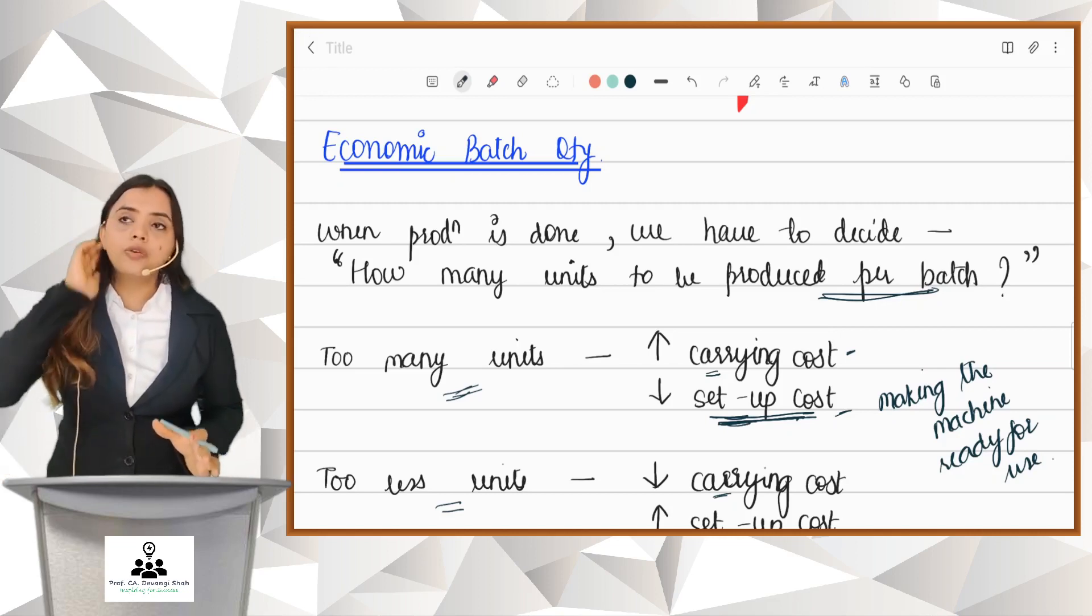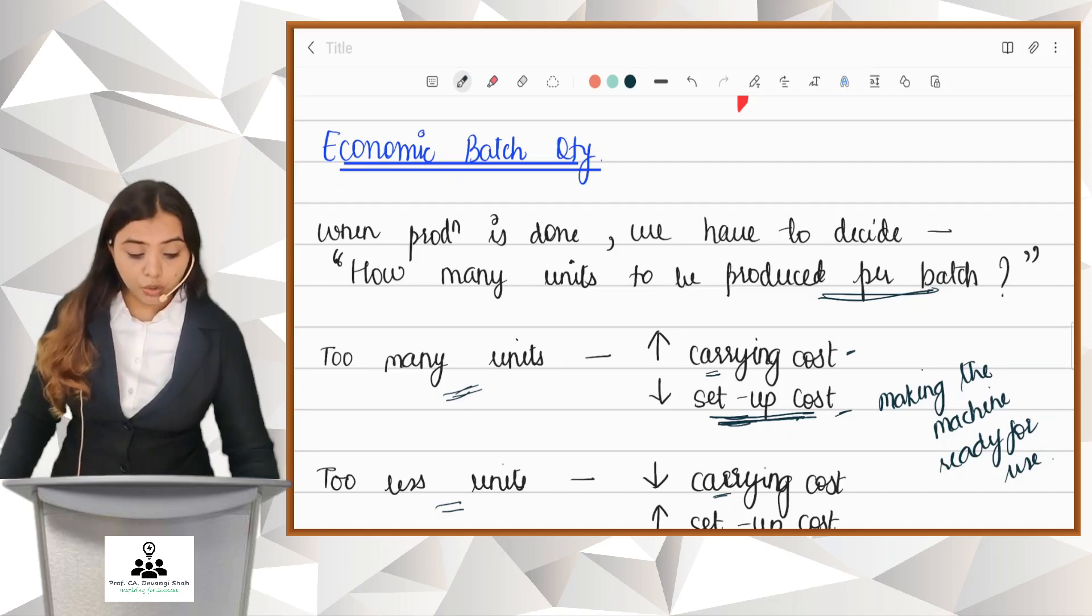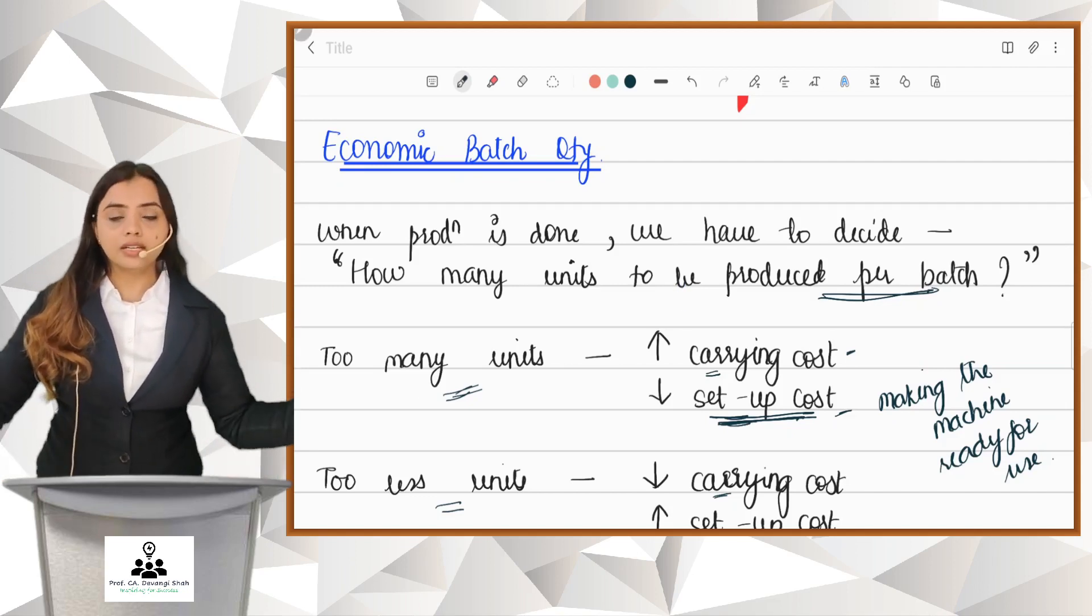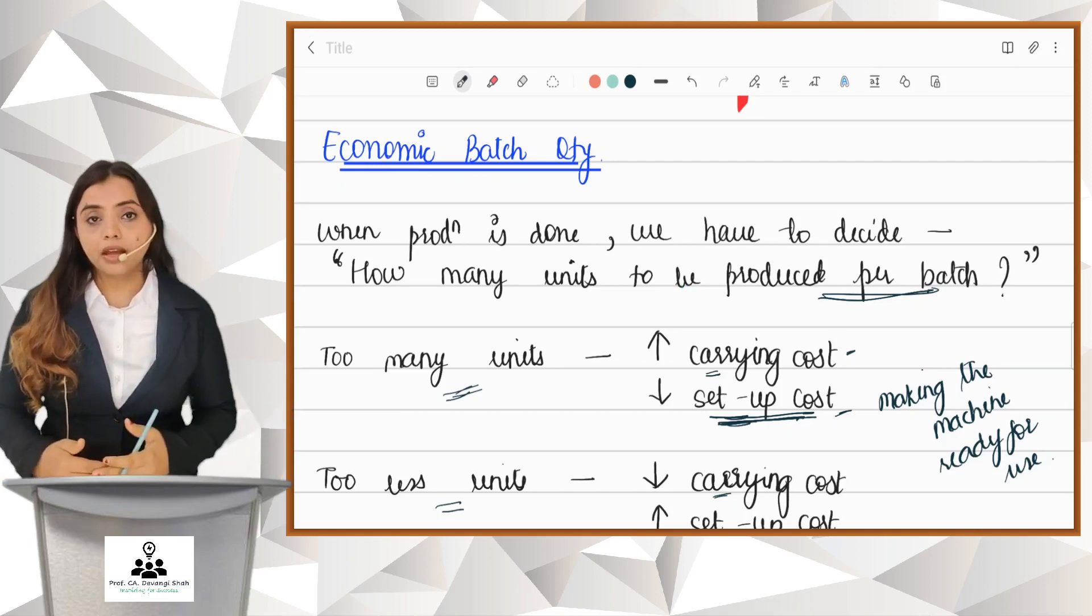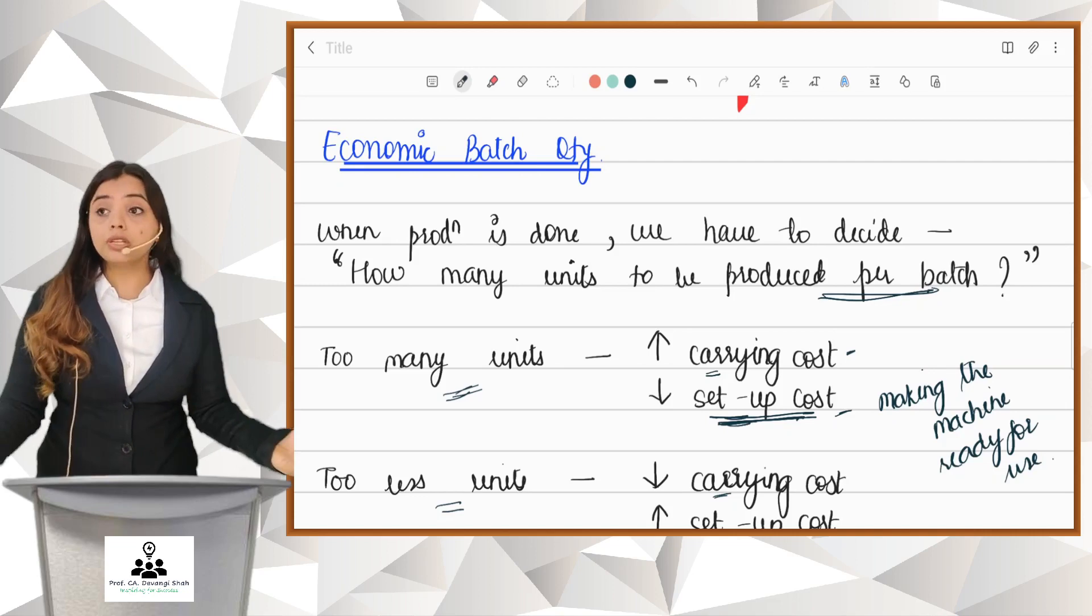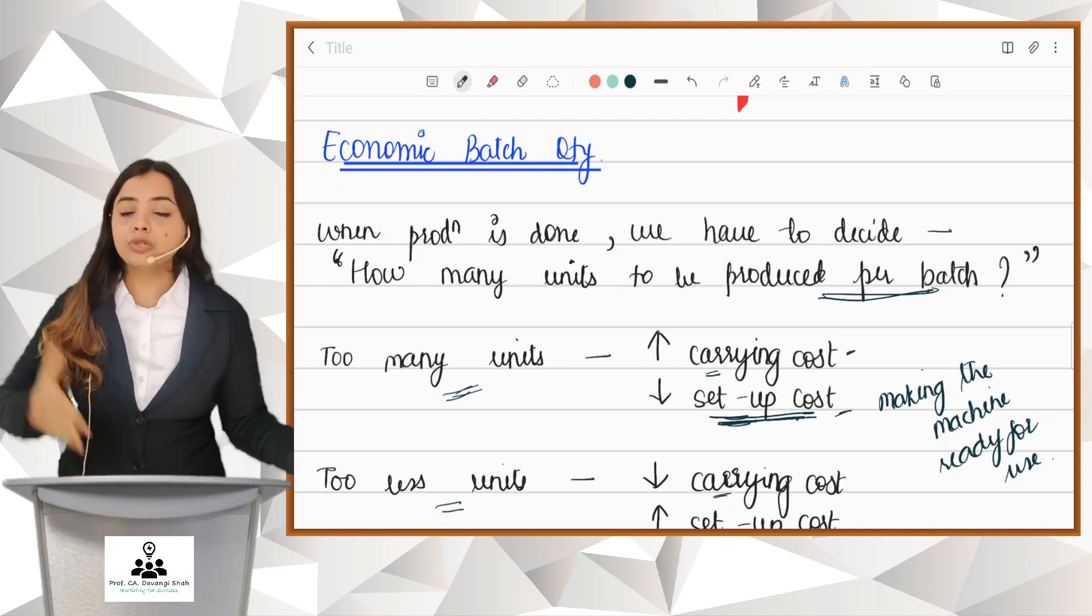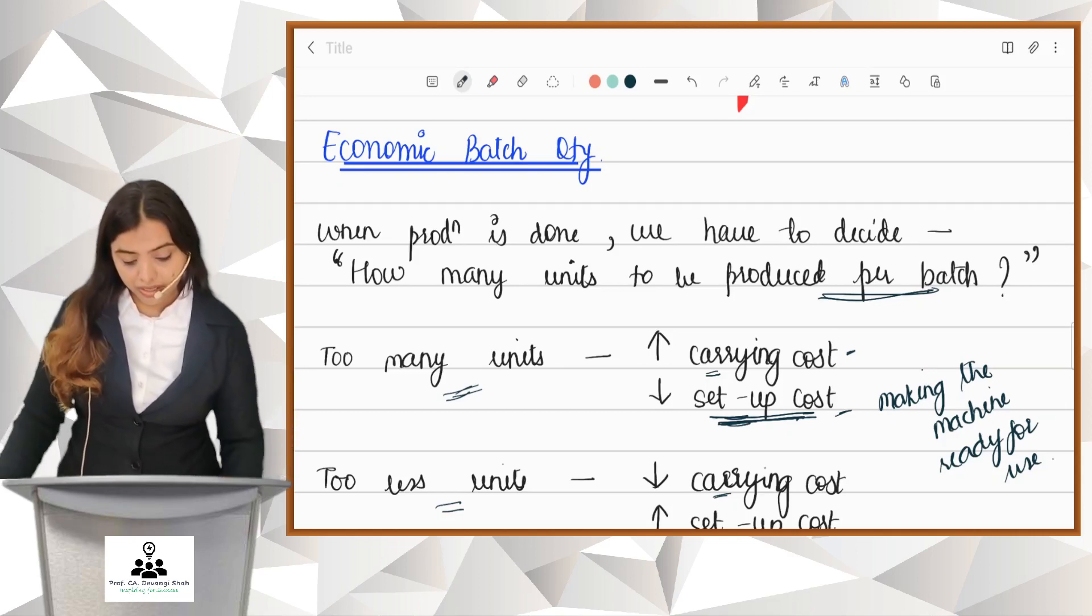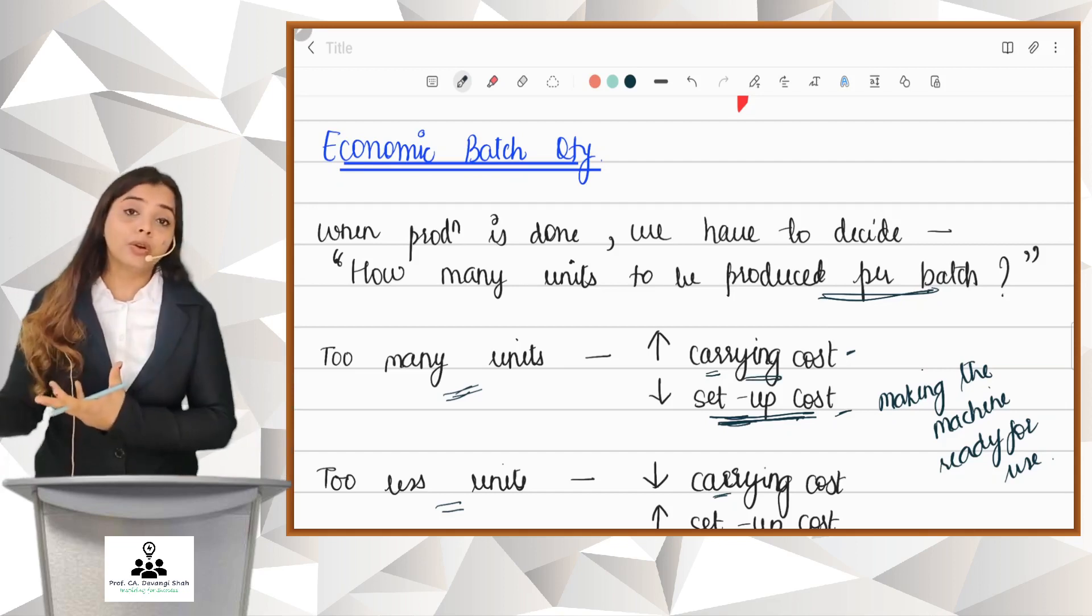Obviously, if you want to minimize your number of setups, you will think of producing too many units at a time. If I produce too many units at a time, my number of setups will be less and my setup cost will be less. But if I produce too many units at a time, they aren't going to be sold at that moment. I will have to store them, and when I have to store the units, I incur carrying cost of inventory. So if I save setup cost, I am spending more on carrying cost.